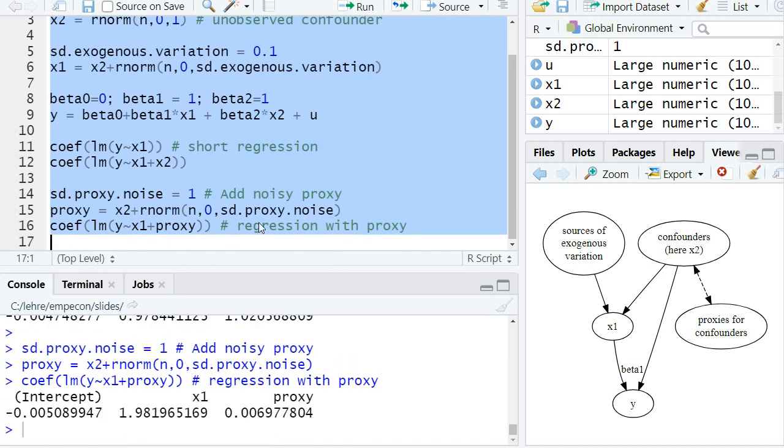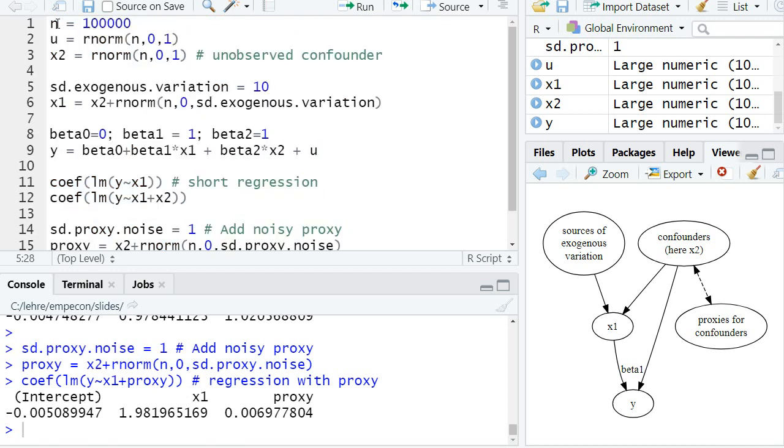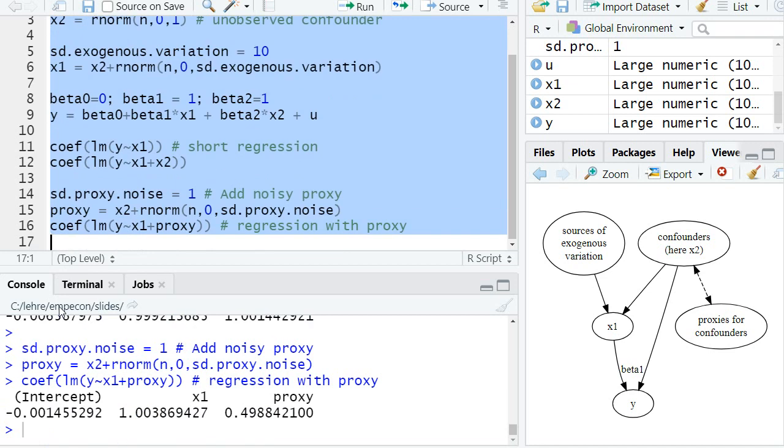I kept the standard deviation of the exogenous variation to 0.1, and again we have a lot of bias. But if we have a lot of exogenous variation in x1, keeping the noise of the proxy the same, the bias vanishes again.